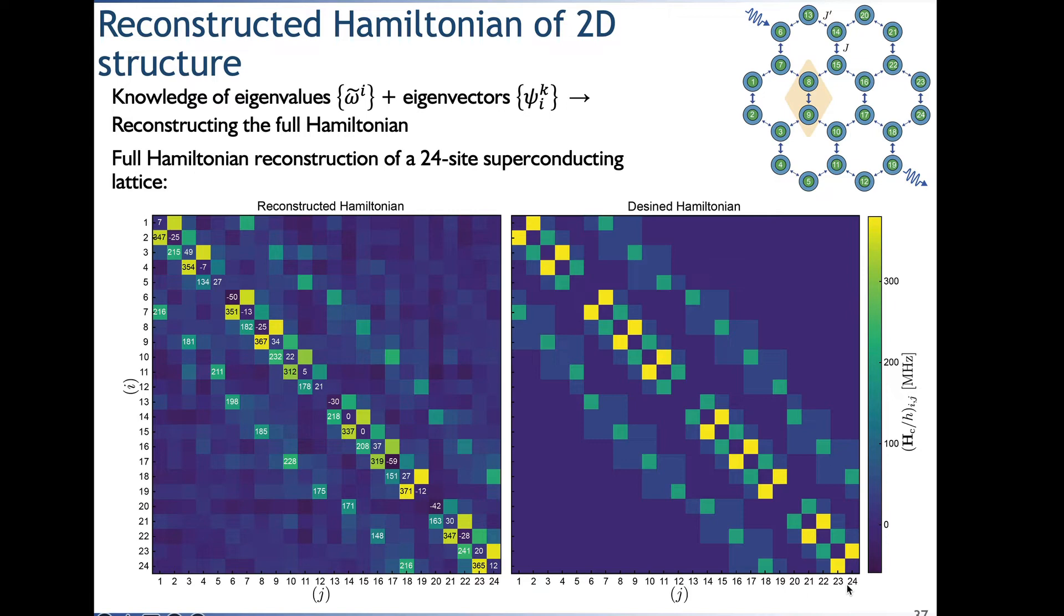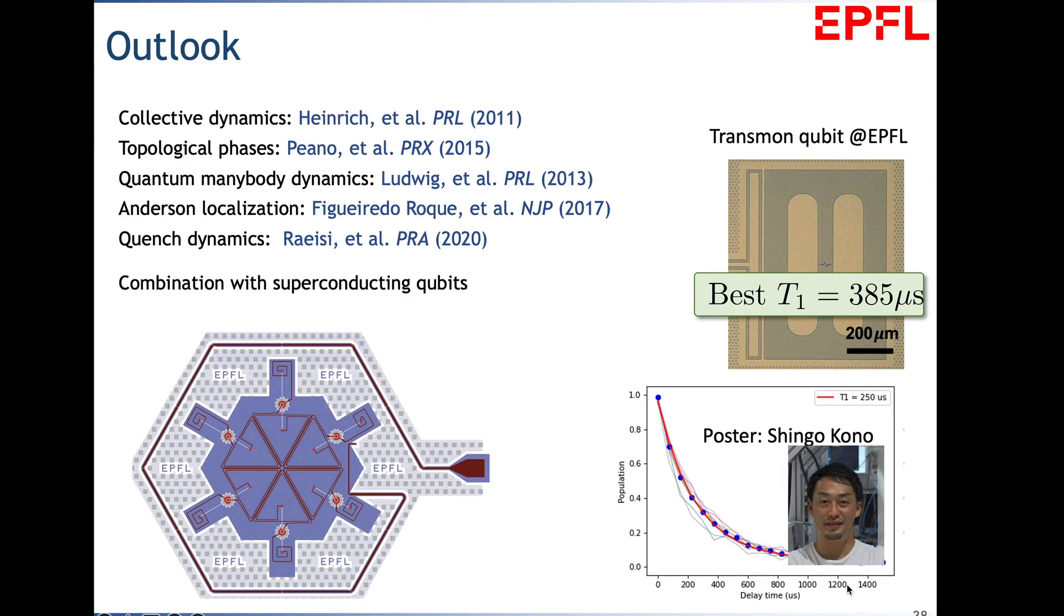This is an example of how we use optomechanical interaction to do a first step into a new direction—using it to measure properties of lattices. These techniques are typically invasive, using scanning probe or laser-based reconstruction. The same technique of reconstruction can be applied to this 24-site flake. From eigenfrequencies and square magnitude of eigenvector components, we reconstruct the full Hamiltonian. It's laborious but automated to increase efficiency. This shows the 24 sites with nearest neighbor coupling and second nearest neighbor. There's a lot of interesting science hopefully coming. We're interested in collective dynamics, collective cooling, and Shingo Kono is bringing expertise on qubits to couple to these superconducting circuits with long coherence times.